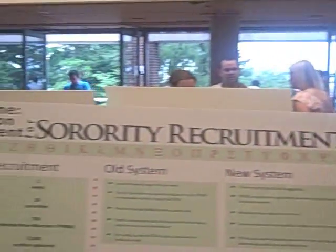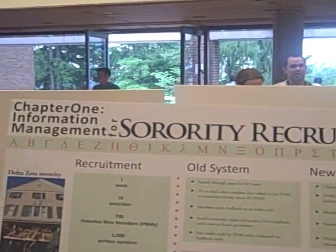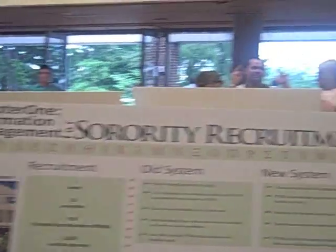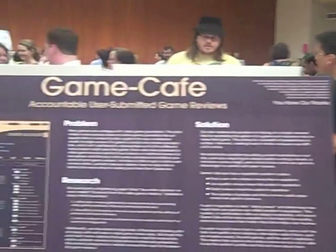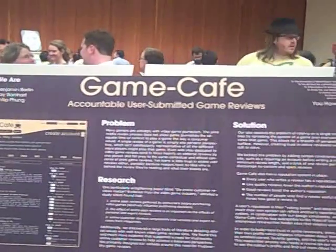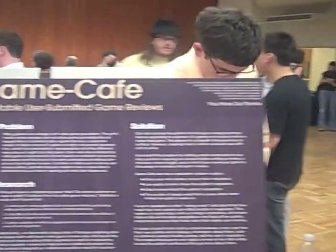I've been in a sorority for three years, two of which I've spent on the side of recruitment recruiting new members. So what we did was implemented a reputation system where if somebody writes a bad review, other people can say, hey, this review is not useful to me, and that will reflect their reputation.